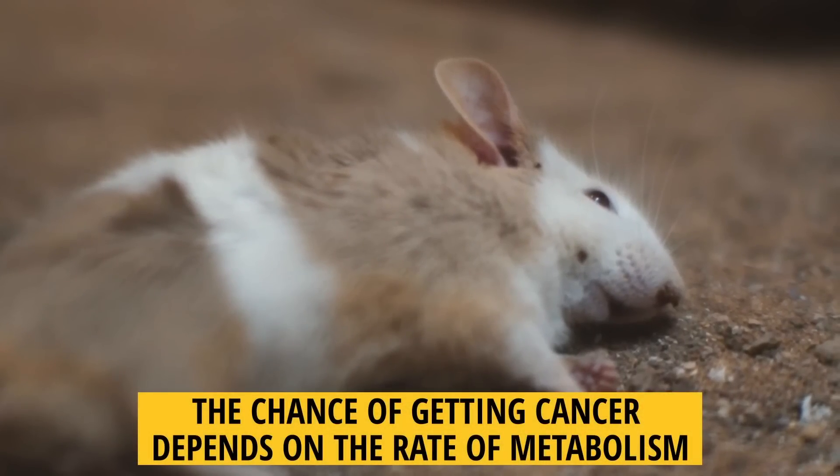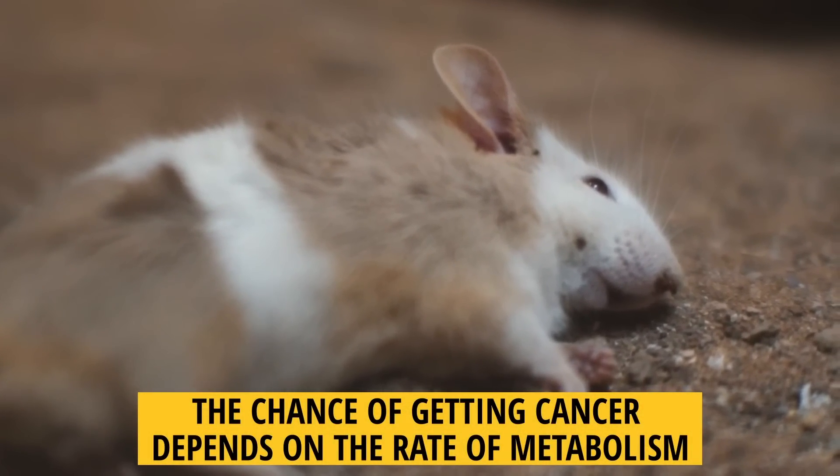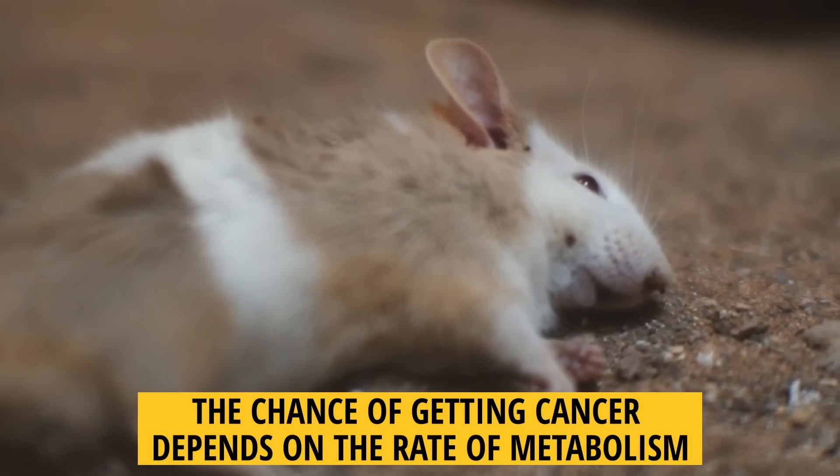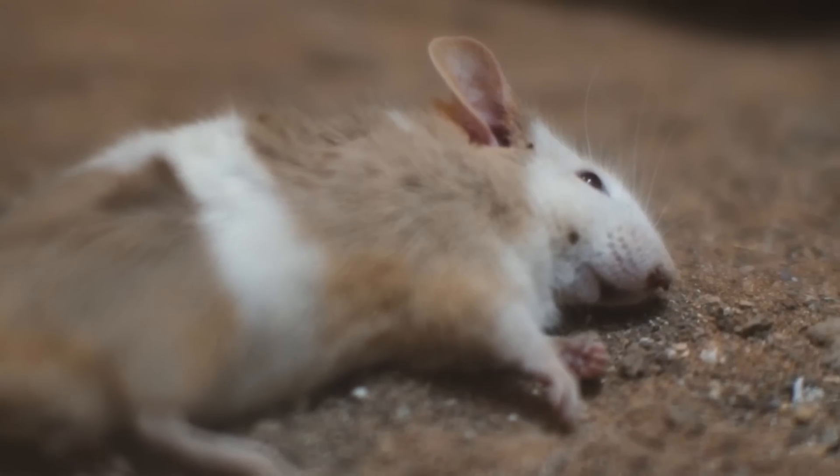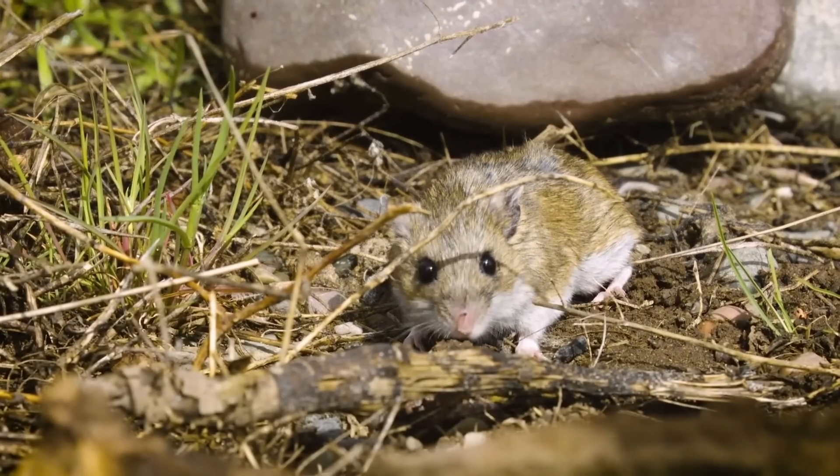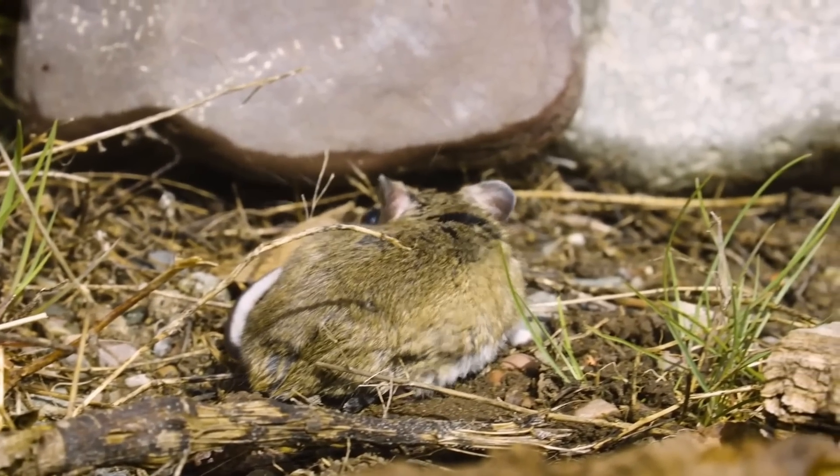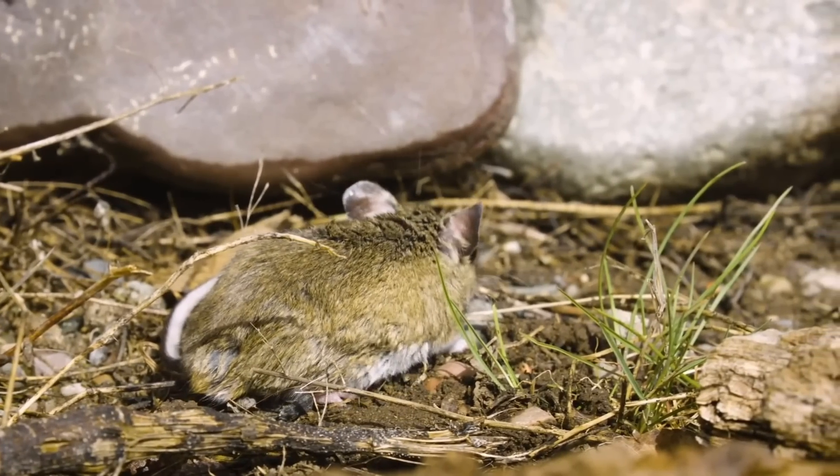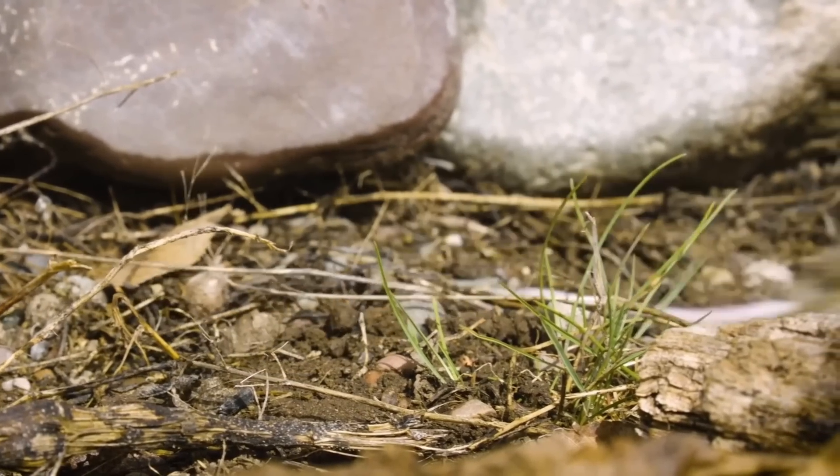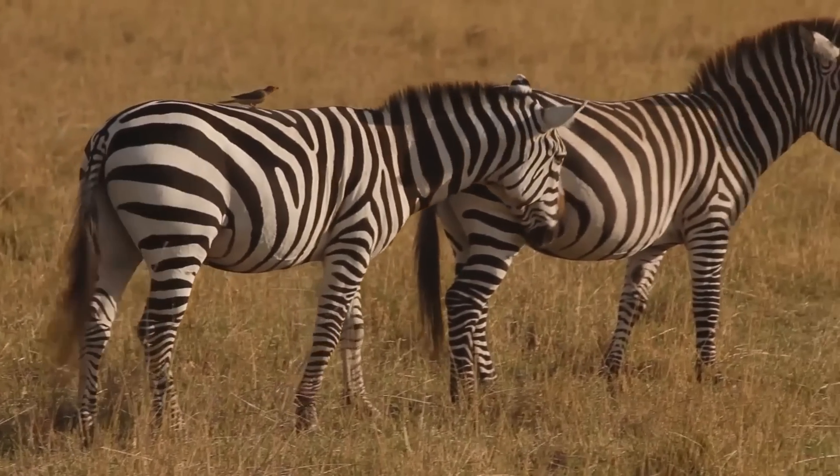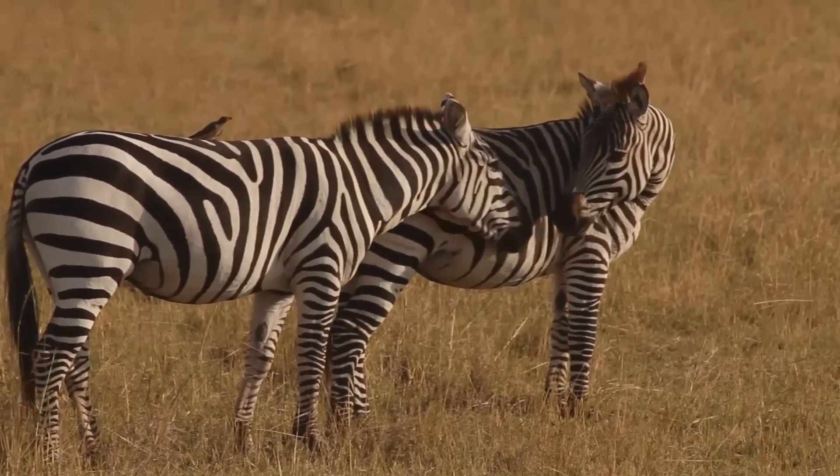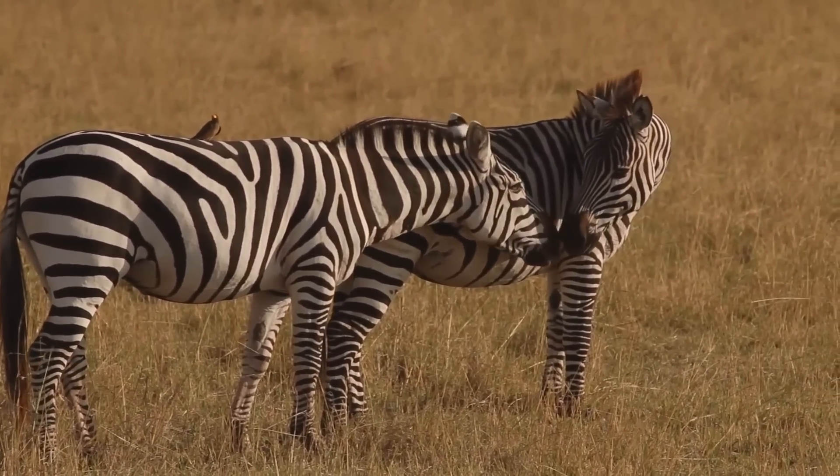The second hypothesis states that the chance of getting cancer depends on the rate of metabolism. For example, mice and whales' total number of heartbeats in a lifetime are very similar, yet their rates of metabolism are different. Mice metabolize fast, and whales' metabolism is relatively slow. A high rate of metabolism causes an increased rate of cell division and vice versa. If the rate of cell division is fast, it may be more likely to have errors that cause the formation of cancer cells.